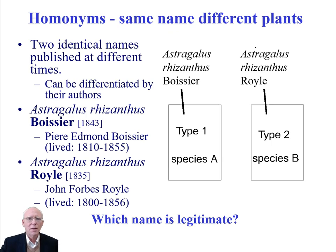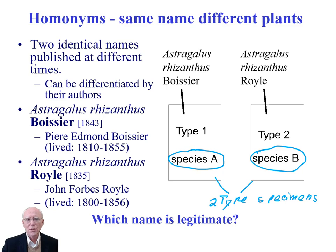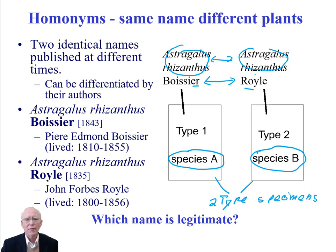Homonyms — same name for different plants. Here we have two different species represented by two different type specimens. These are two different herbarium specimens, different plants, but they have been given the same name: Astragalus rhysanthus. They've been given these names by two different authors — Boissier in one case and Royle in another. Whoever did the later work didn't know about the earlier person's work, so let's look at the dates.